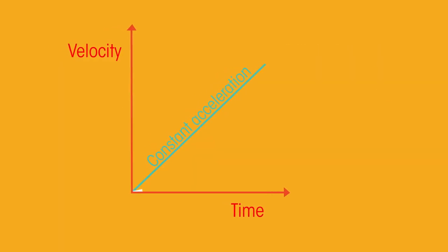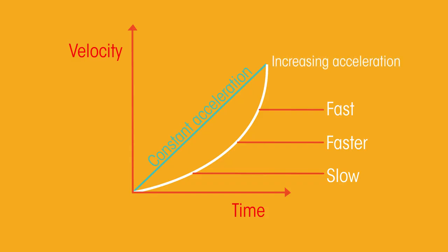But maybe you start off just giving a little gas, and then once you're on the motorway, you want to hit full speed sooner, so you accelerate faster. This would be a curved line like this on the graph.